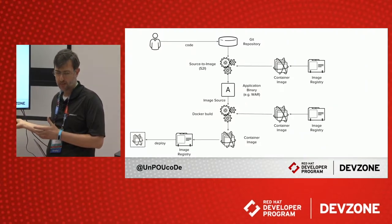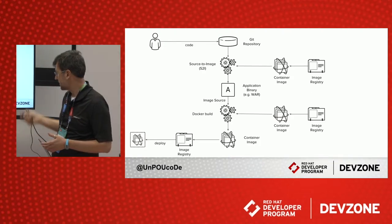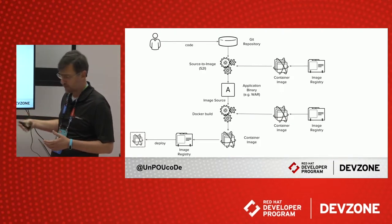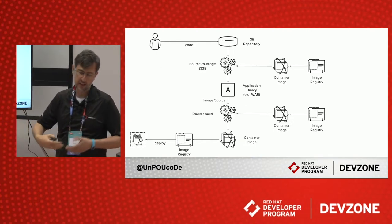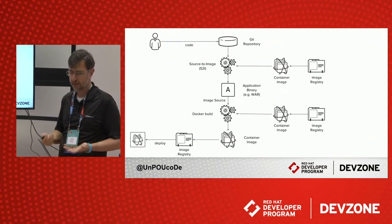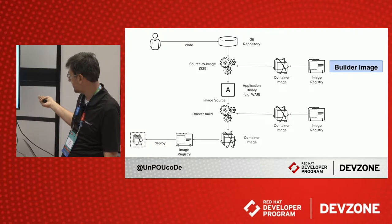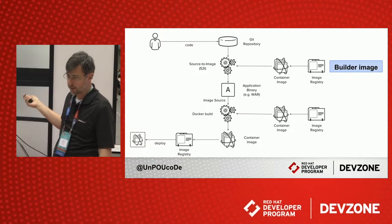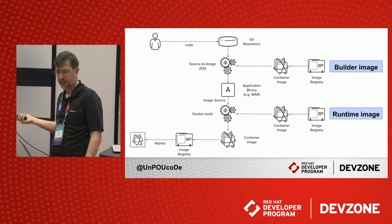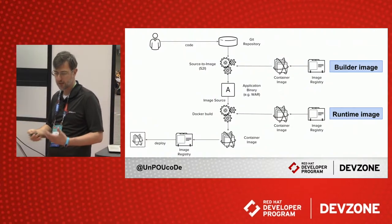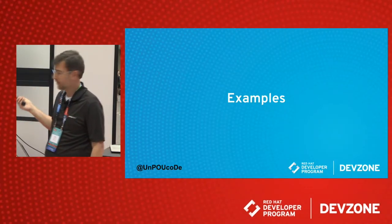That second builder image puts the artifact in a specific location in your runtime image. It uses Docker strategy — Docker build — gets your artifact, puts it in a location, creates an image, pushes it into a registry, and that image is then used to run your application. So the first image is a builder image and the second image is a runtime image. These can be specialized images you create and combine in a more flexible way.